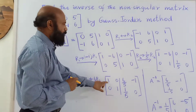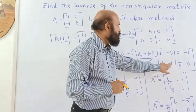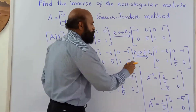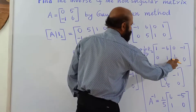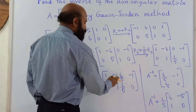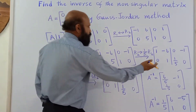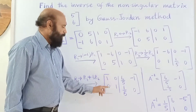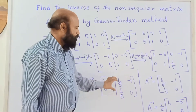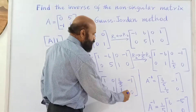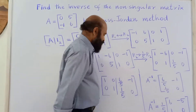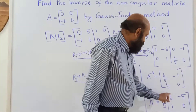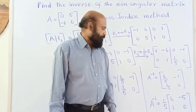After multiplying row 2 by 6 and adding to row 1, the left side becomes the identity matrix [1 0 / 0 1]. On the right side, the (1,1) entry becomes 6/5, the (1,2) entry becomes −1, and the second row remains [1/5, 0]. So the inverse of the given 2×2 matrix is [6/5, −1 / 1/5, 0]. Factoring out 1/5, this becomes (1/5) times [6, −5 / 1, 0].